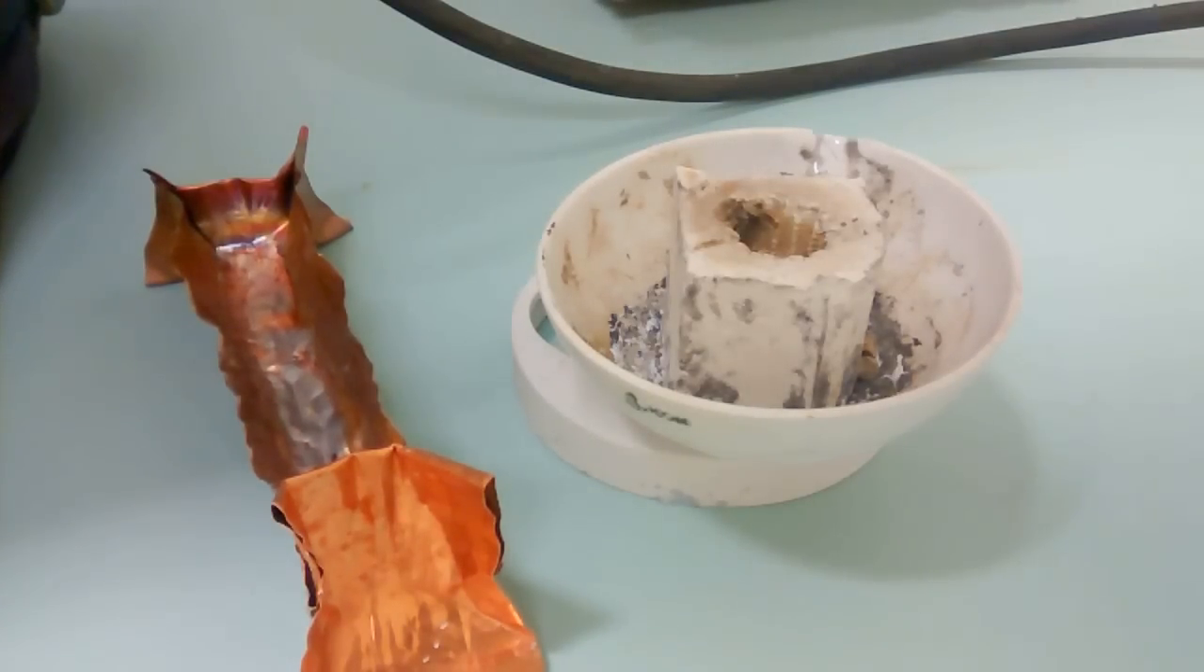I've already preheated a batch of solder to about 500 degrees Celsius using a kiln, although you can't see the kiln right now.